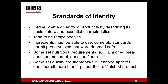These are the main points about standards of identity: they define a food by describing its basic nature and essential characteristics, and they tend to be recipe-based. Some food standards will set nutritional requirements for a product — examples of that would be enriched bread, enriched flour, and enriched macaroni products. And some food standards include quality requirements; another example would be canned apricots that don't permit more than one pit in eight ounces of finished product.